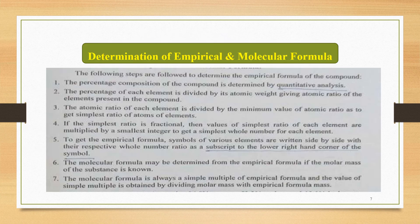The next important concept is determination of empirical and molecular formula. The following steps are used to determine the empirical formula. Step 1: the percentage composition of the compound is determined by quantitative analysis. Step 2: the percentage of each element is divided by its atomic weight, giving the atomic ratio of the elements present in the compound.